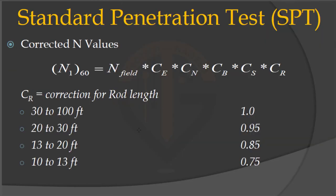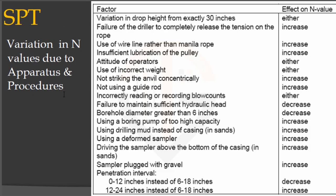By applying all these corrections you can find out the corrected N value. This table discusses in detail the variation in N values due to apparatus and procedure, showing how the value of N can be influenced by multiple factors.